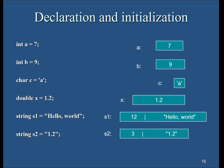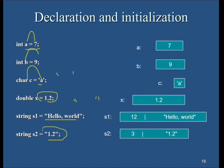For declaration and initialization: int a = 7, b = 9; char c = 'a' — notice the single quotes for character; double x = 1.2 — 1.2 has a decimal so it is a double. A string is always inside double quotes. Note that '1.2' inside double quotes becomes a string literal, not a double value. That covers declaration and initialization for this session.